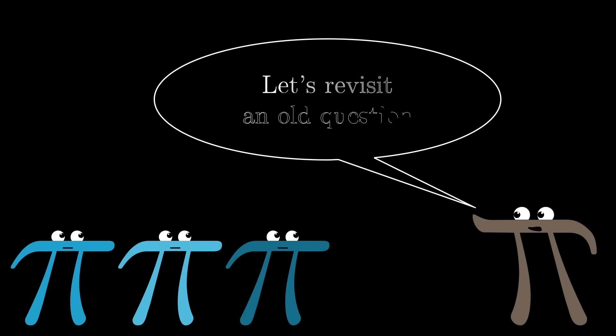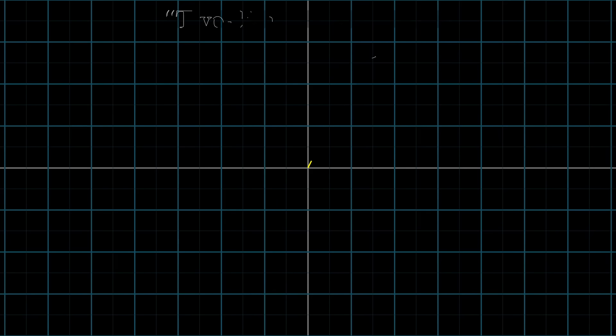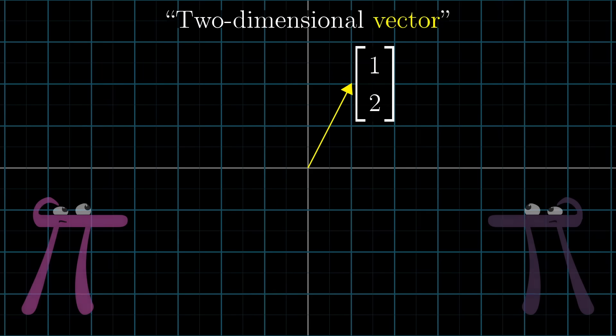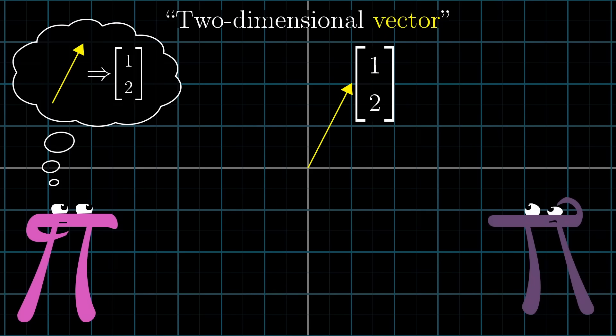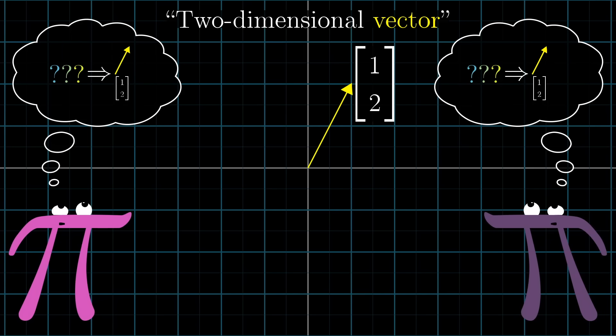I'd like to revisit a deceptively simple question that I asked in the very first video of this series. What are vectors? Is a two-dimensional vector, for example, fundamentally an arrow on a flat plane that we can describe with coordinates for convenience, or is it fundamentally that pair of real numbers which is just nicely visualized as an arrow on a flat plane? Or are both of these just manifestations of something deeper?